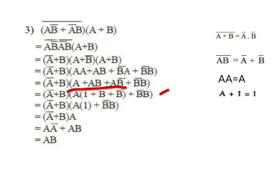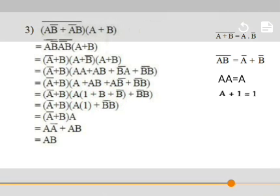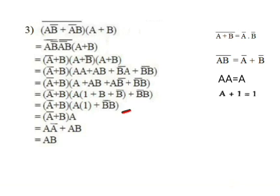Since A into A equals A, we get AB plus AB complement plus B complement into B. Taking A common in three terms: A into (1 plus B plus B complement) plus B complement into B. Now 1 plus B plus B complement equals 1 since A plus 1 equals 1, so A into 1 equals A, and B complement into B equals 0.